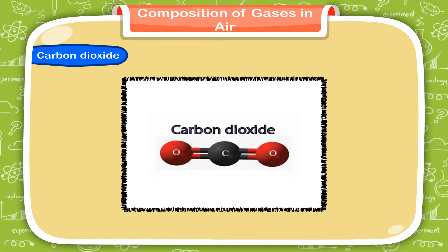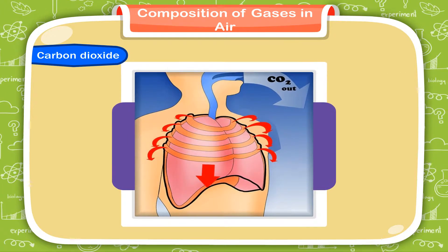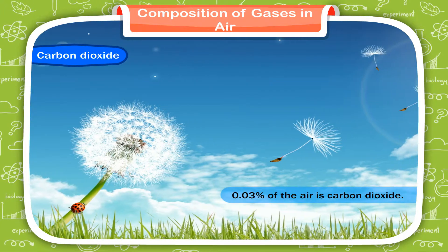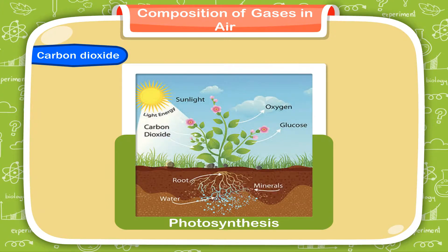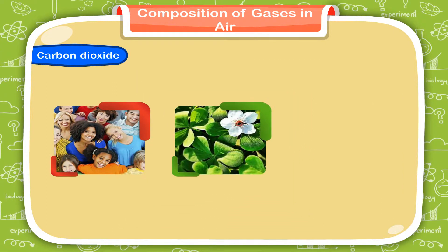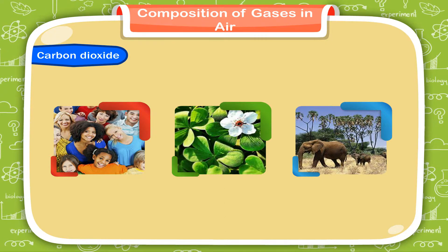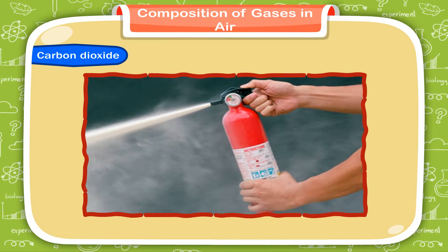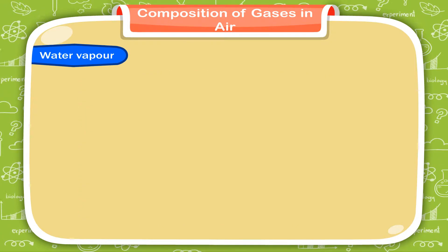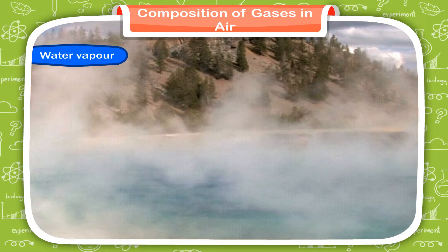Carbon dioxide is the gas that we give out during breathing. When anything burns, the gas produced is carbon dioxide. 0.03% of the air is carbon dioxide. Carbon dioxide is taken in by green plants during photosynthesis. Humans, plants and animals take in oxygen gas for respiration and release carbon dioxide. This gas does not support burning and hence is used in fire extinguishers.